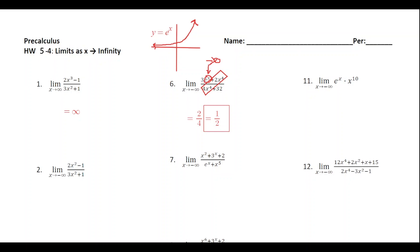For number eleven, we've got the limit as x approaches negative infinity of e to the x times x to the tenth. As we talked about, e to the x approaches zero as x goes to negative infinity, so that term gets closer and closer to zero. Zero times anything gets closer and closer to zero, so the whole expression approaches zero. The x to the tenth is sort of irrelevant — it could be any expression and the result would still go to zero. So number eleven equals zero.